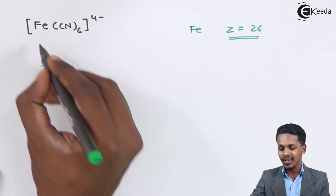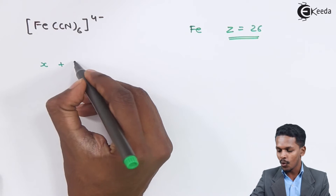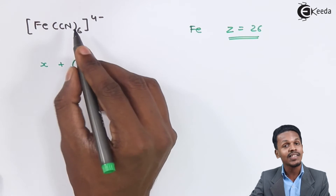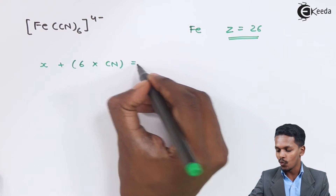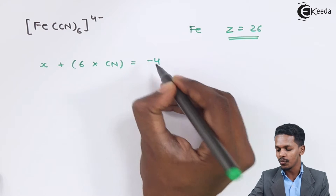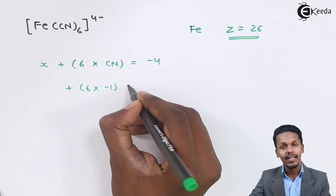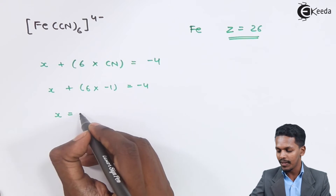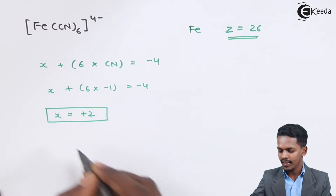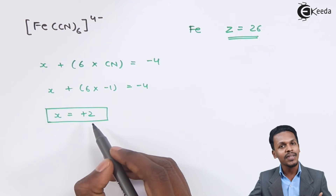Let us find the oxidation number of Fe. We consider the oxidation number of Fe as X, since Fe is a transition metal with variable oxidation state. The surrounding ligands are cyanide groups — six cyanide groups surround the central metal atom, and the overall charge is minus four. Since cyanide is a negative ligand with a charge of −1, the oxidation number of iron works out to be +2.